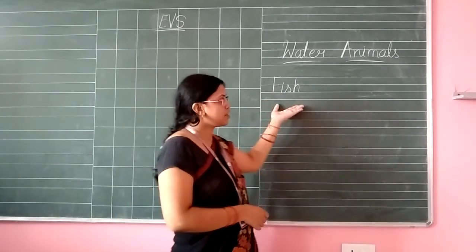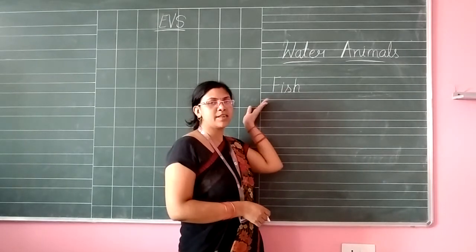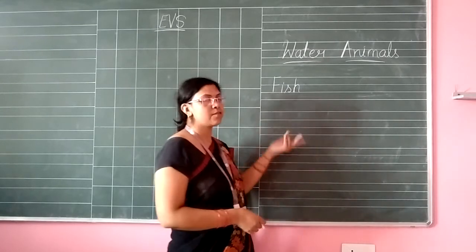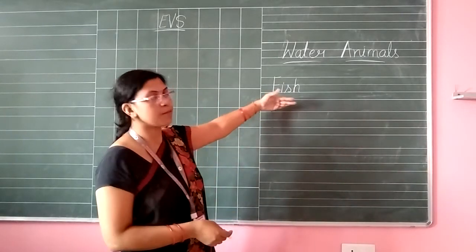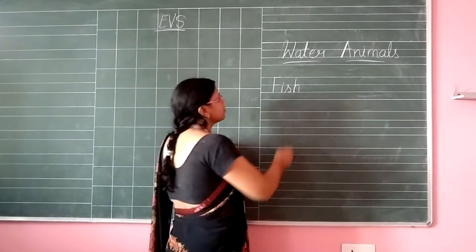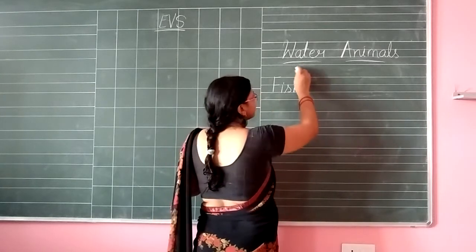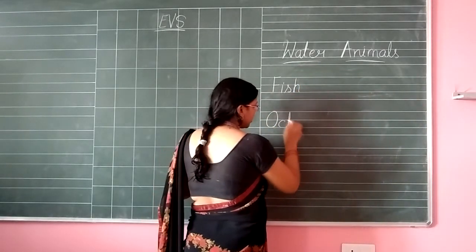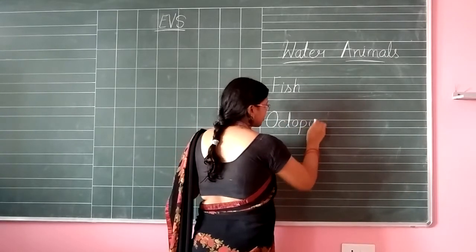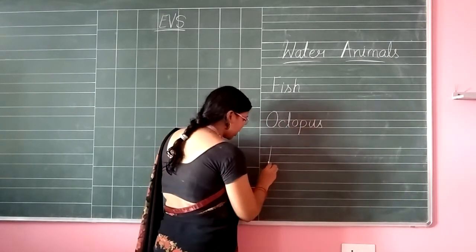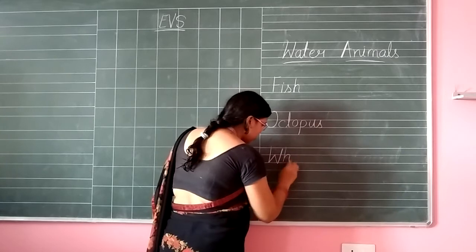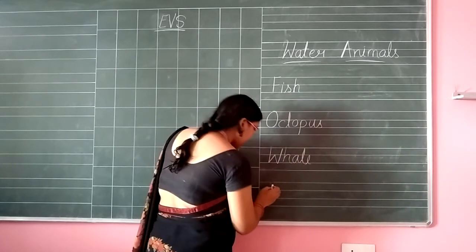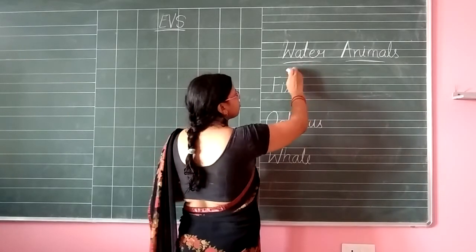If we use a muskik, we can use water to get water. We can use water to get water. This is a water. We can use water. If we use a muskik, we can use water.